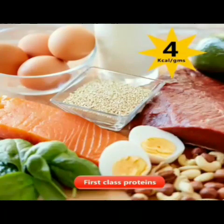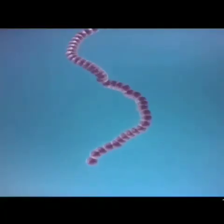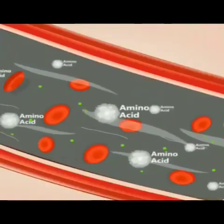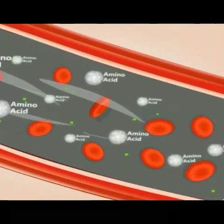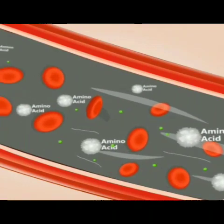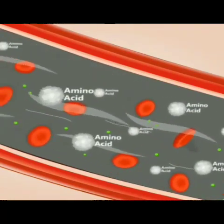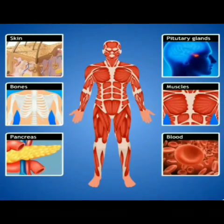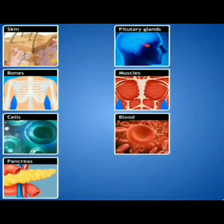After digestion of proteins, amino acids are obtained. These amino acids are absorbed in the body and transported to each organ via blood. From these amino acids, organs and cells produce various proteins necessary for themselves.